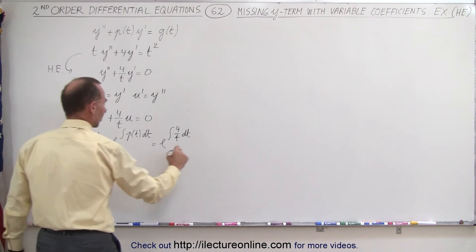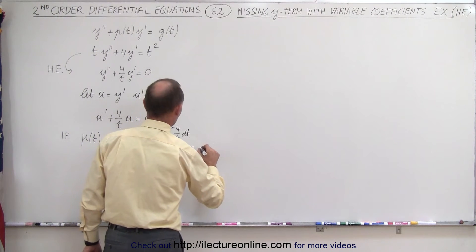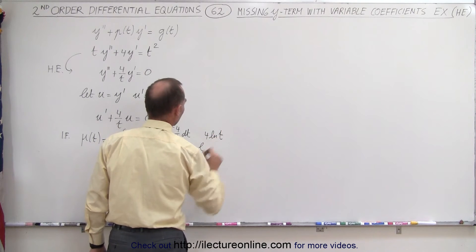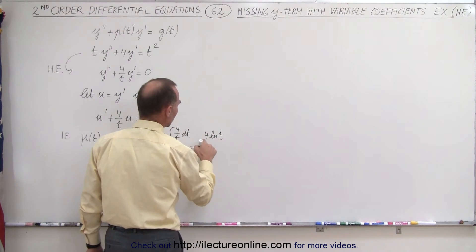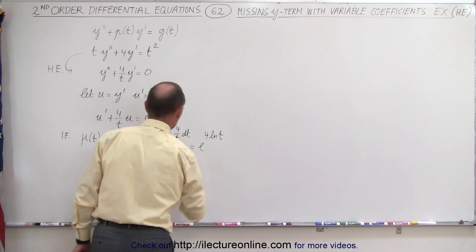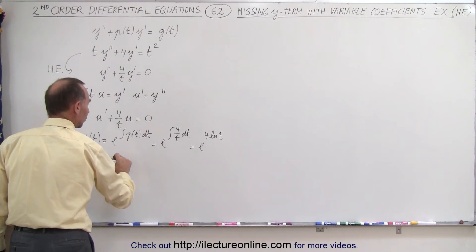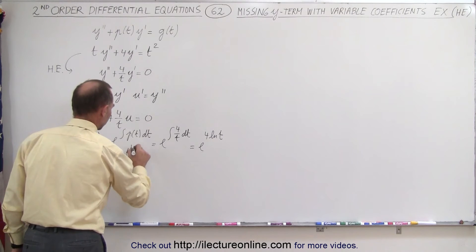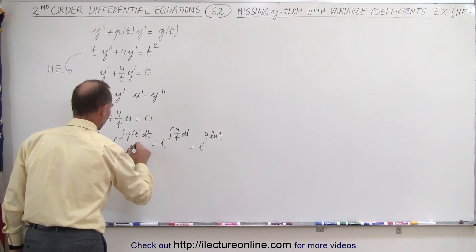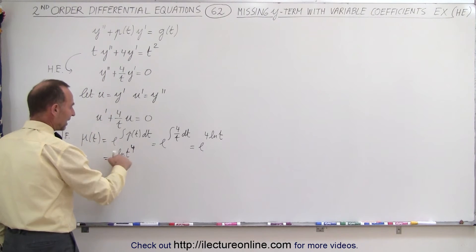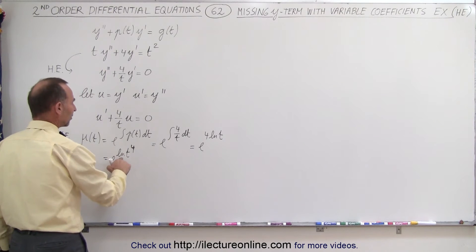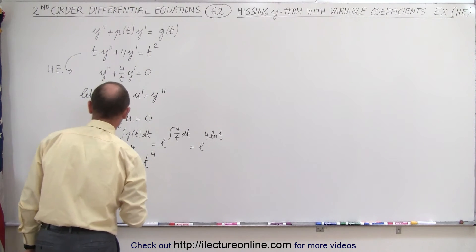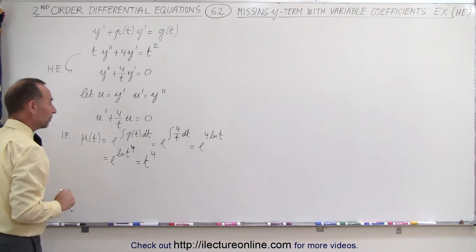So this becomes e to the 4 times the natural log of t. Which means we can take the 4 and make it the exponent, so this is equal to e to the natural log of t to the 4th power. And then the exponential negates the natural log, so this is equal to t to the 4th power. That's called the integrating factor.